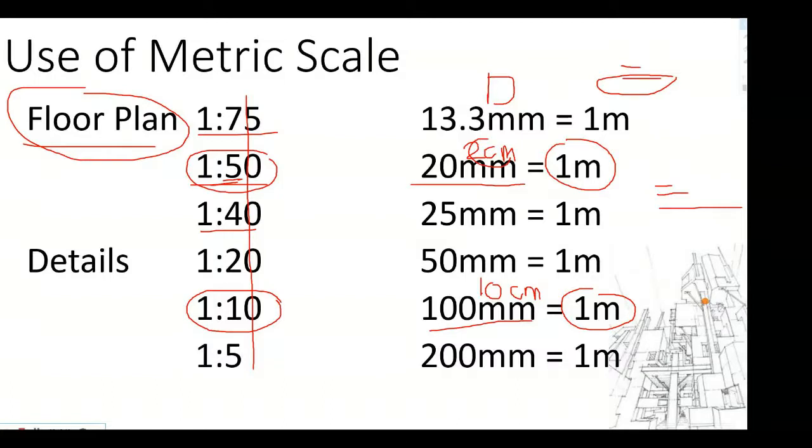So it becomes larger, the corresponding drawing. So again, remember: the smaller the number here used in the metric scale, the larger the corresponding drawing. Or when the number of the metric scale used is higher, the smaller the equivalent drawing or the corresponding drawing. That is why for detailed plans, the metric scales used are 1 is to 20, 1 is to 10, and 1 is to 5.